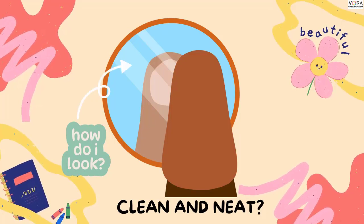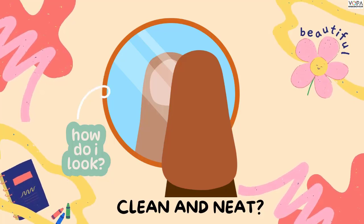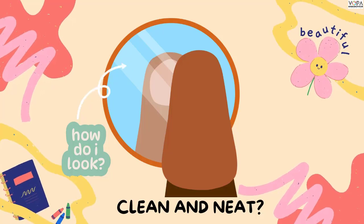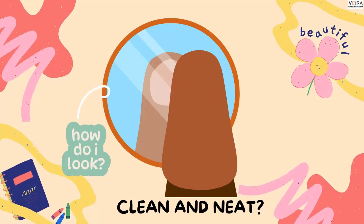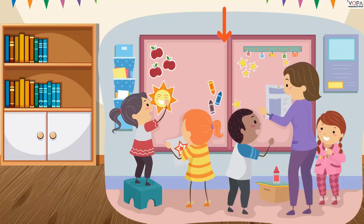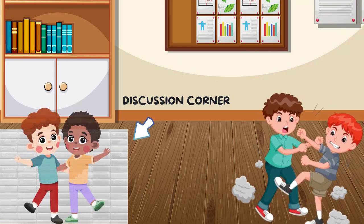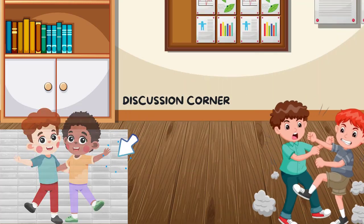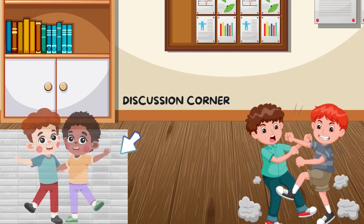तुम्हाला नव्याने समजतील. तुम्ही आता उत्सुक आहात ना? आमच्या class मध्ये पहिली गोष्ट म्हणजे आमचे classroom स्वच्छ आणि नीटनेटके असेल तर class मध्ये दुसरी छान गोष्ट म्हणजे आमच्या वर्गामध्ये एक soft board आहे. आम्ही केलेले वेगवेगळे आर्ट आणि क्राफ्ट. पहले आम्ही Discussion Corner ला जातो.